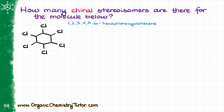When it comes to questions like that, we need to come up with some sort of a system — how to draw all possible stereoisomers without repeating ourselves or getting lost and forgetting some of those. So I would suggest we start by taking all of our chlorines and pointing them looking at us. We'll have all chlorines looking at us on the wedge, just like that.